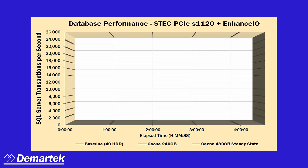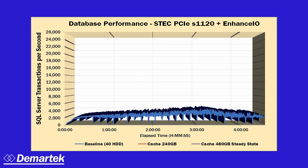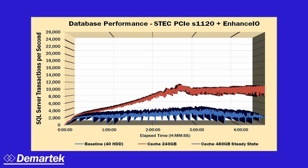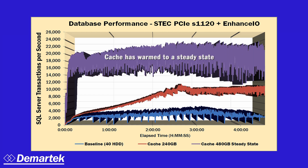For the second set of tests, we configured a single PCIe SSD accelerator as a cache in front of the fiber channel SAN storage. In one case we used a 240GB SSD, and in the other we used a 480GB SSD. We repeated the same tests as before, but ran them longer to allow the cache to warm up. With the smaller cache, we observed approximately a 4x improvement in database transactions per second. We ran an additional test with the larger cache after it was fully warmed and observed an average of 8x improvement over the baseline.